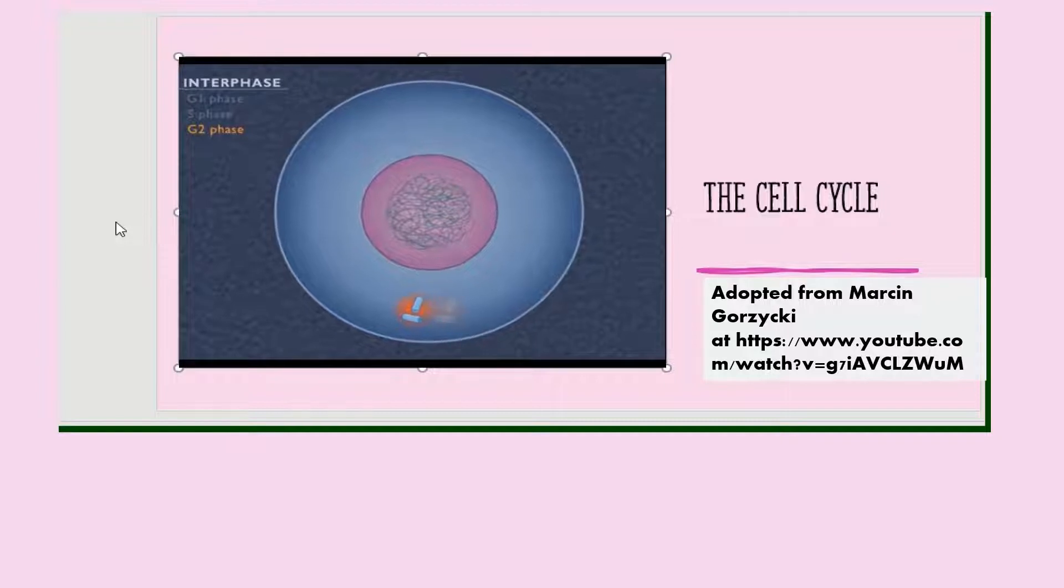In the S phase, DNA replicates, producing two copies of each chromosome. During the G2 phase, the cell continues to prepare for mitosis and cell division.